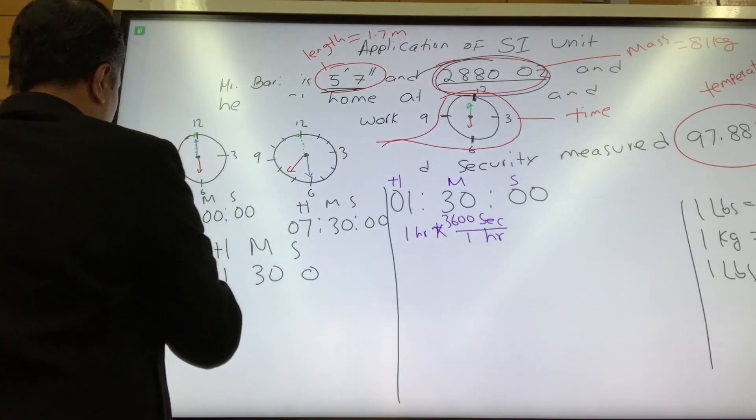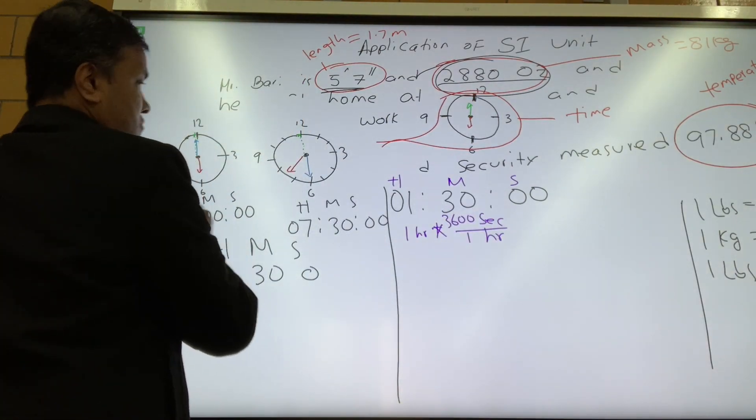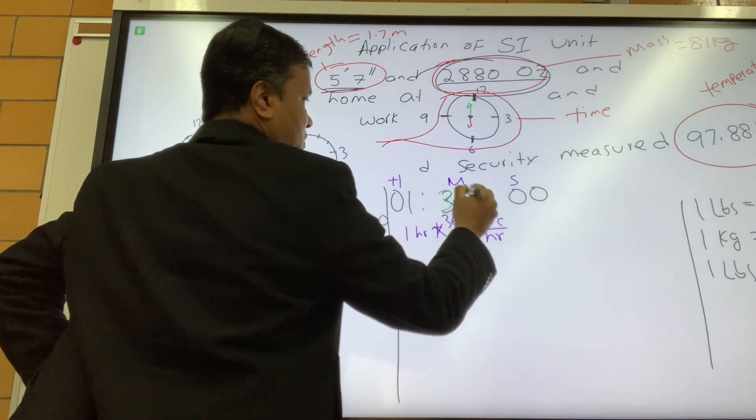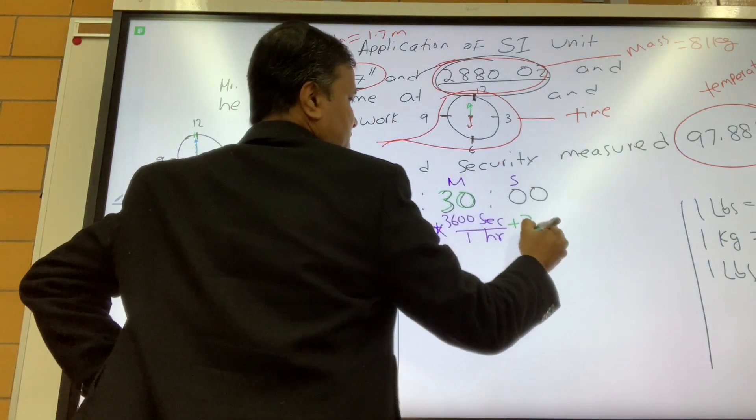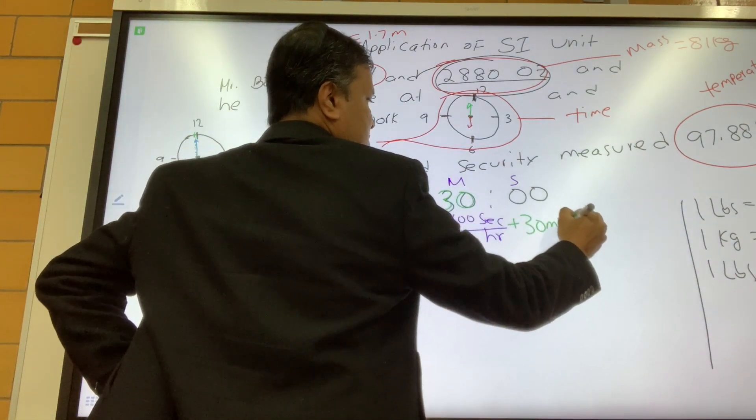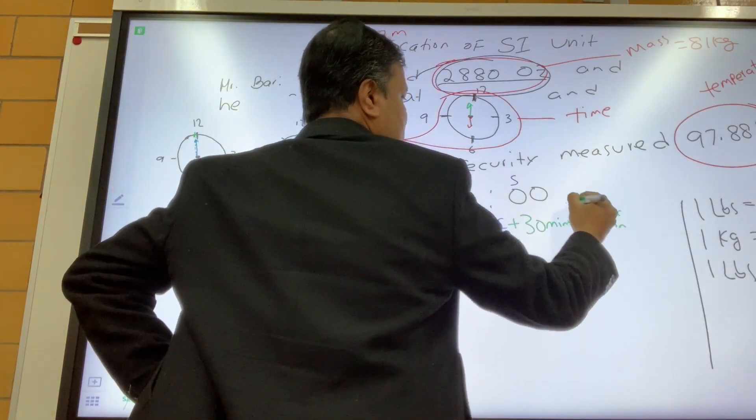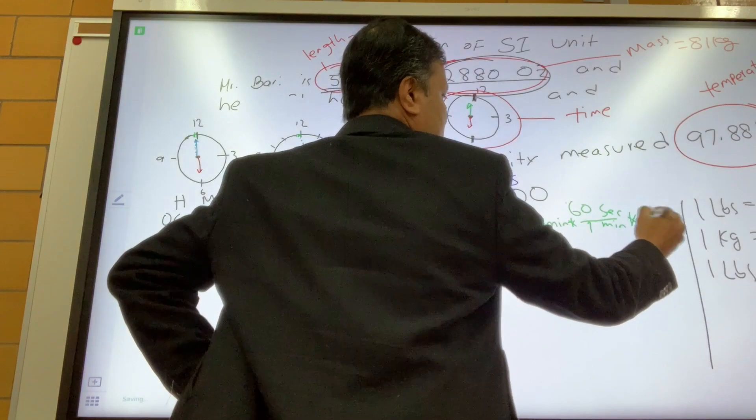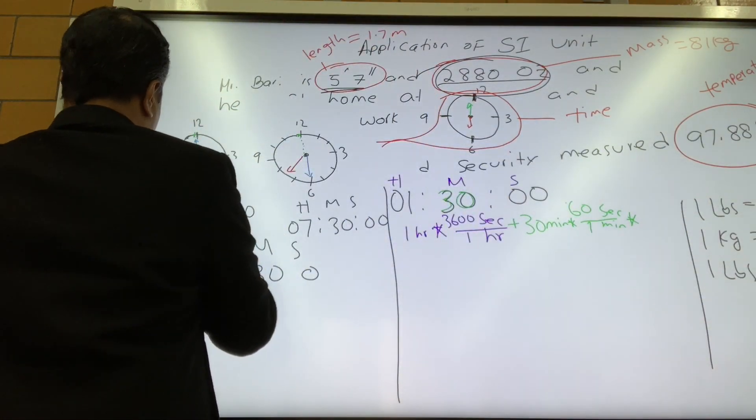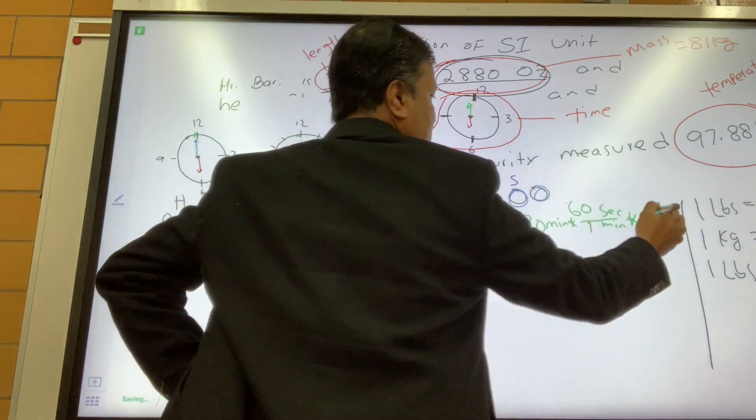So one hour minute second. So one hour times, the hour should be on the bottom and second should be on the top. One hour is 3,600 second. Now let's use a different color for the minute. So 30 minute is equal to second. Hour, minute, so 60 second is one minute, and now zero second.